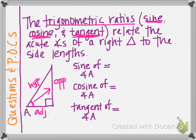If we write these three ratios with respect to angle A, the definition of the sine of angle A goes like this. The abbreviation for sine is S-I-N. Please don't say "sin" — it's sine. The sine of angle A is going to be equal to the opposite leg over the hypotenuse. Whatever numbers or expressions you have for those two sides, you would just put there.